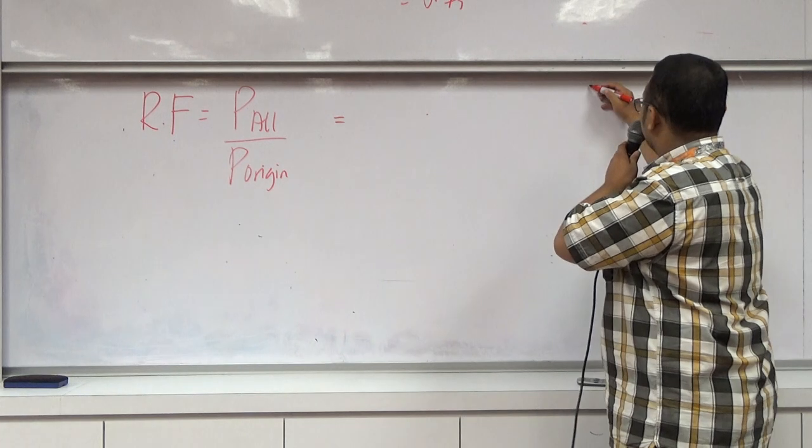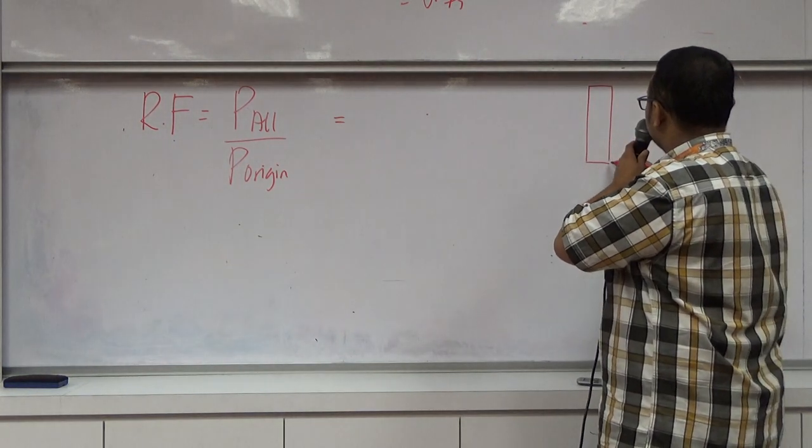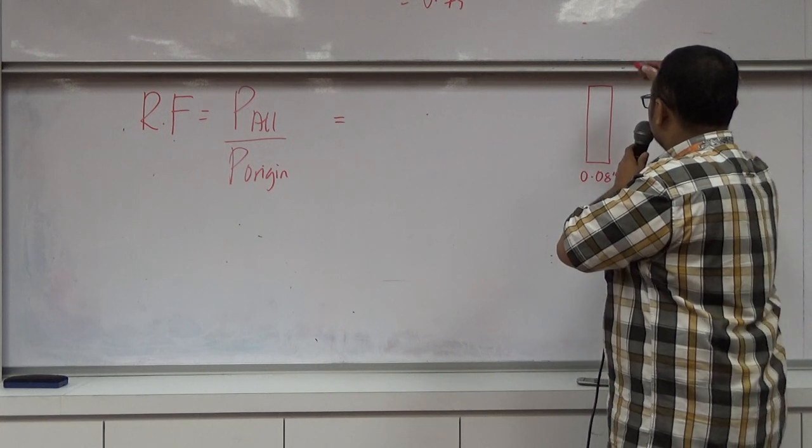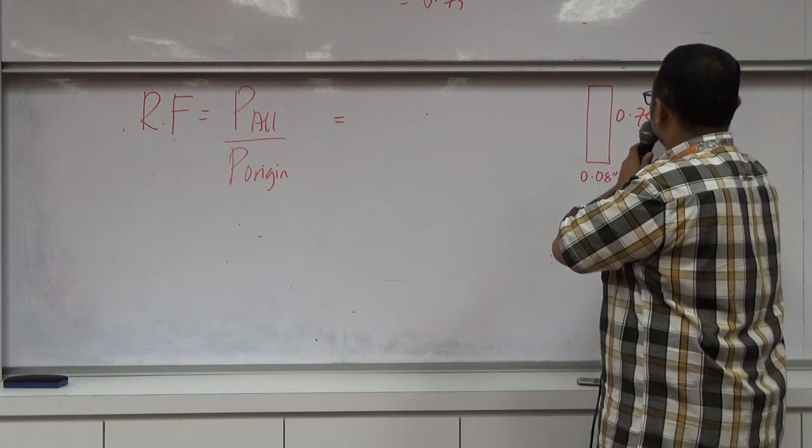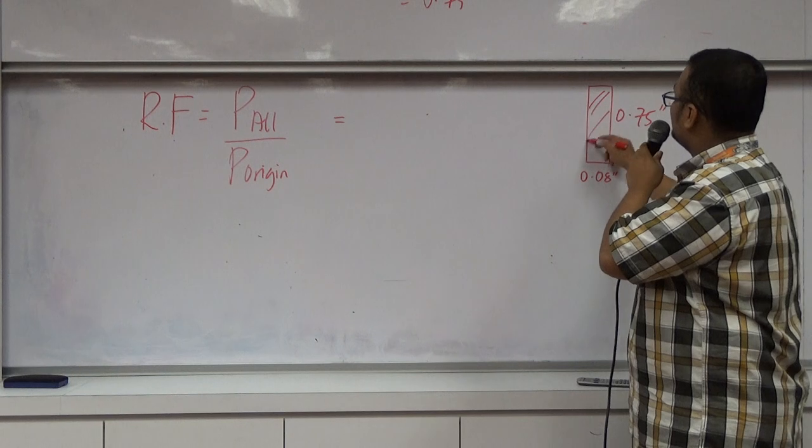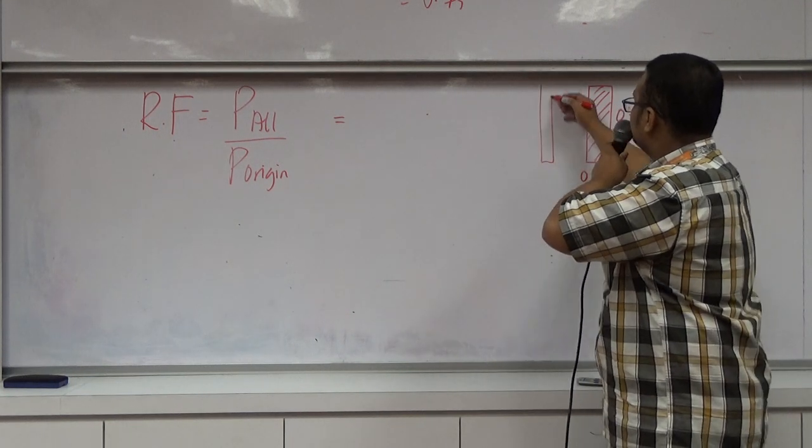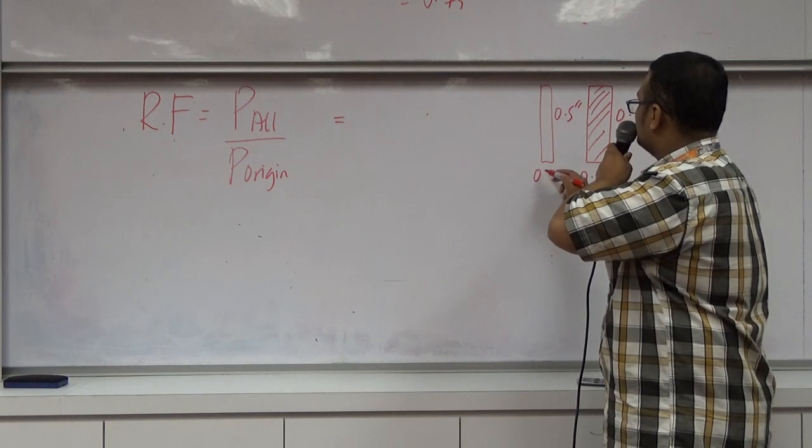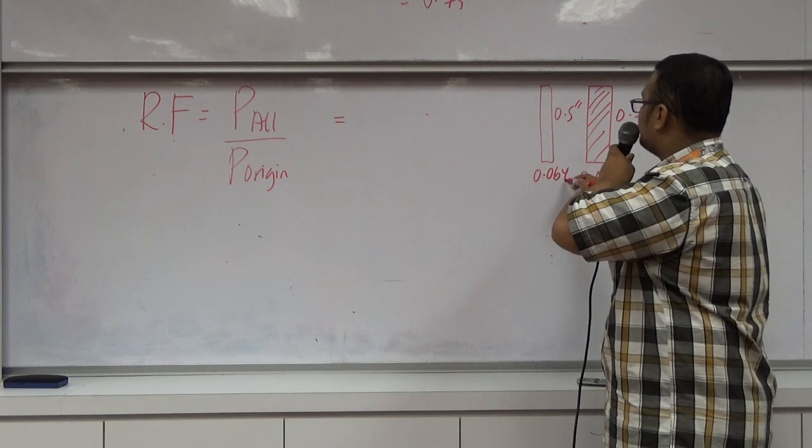The doubler that we just proposed is having this size. The thickness is 0.08 inches, the height is 0.75 inches. Meanwhile, the cut out is having 0.5 inches and 0.064 inches.